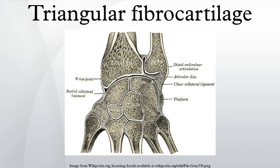Even though natural degeneration of the ulnocarpal joint is very common, it is important to recognize. In cadaveric examinations, 30% to 70% of cases had TFCC perforations and chondromalacia of the ulna head, lunate, and triquetrum. Cases with ulna-negative variants had fewer degenerative changes.